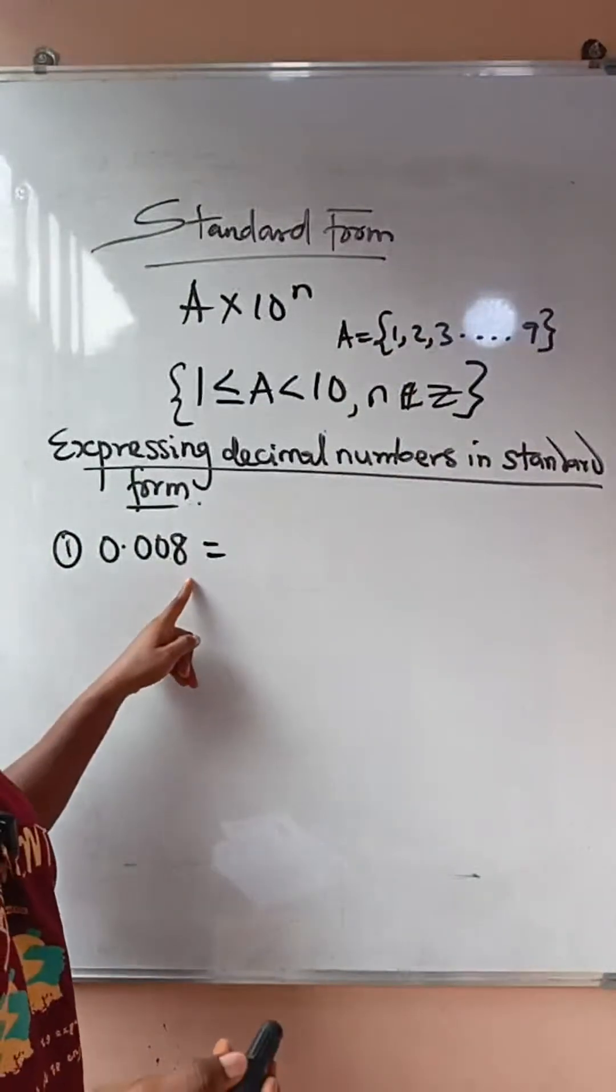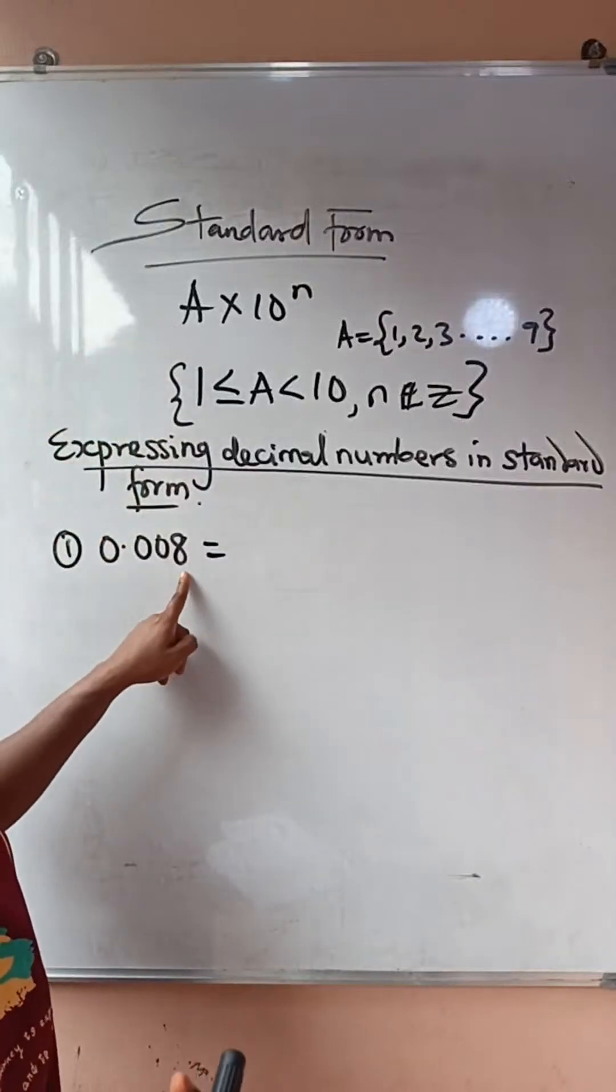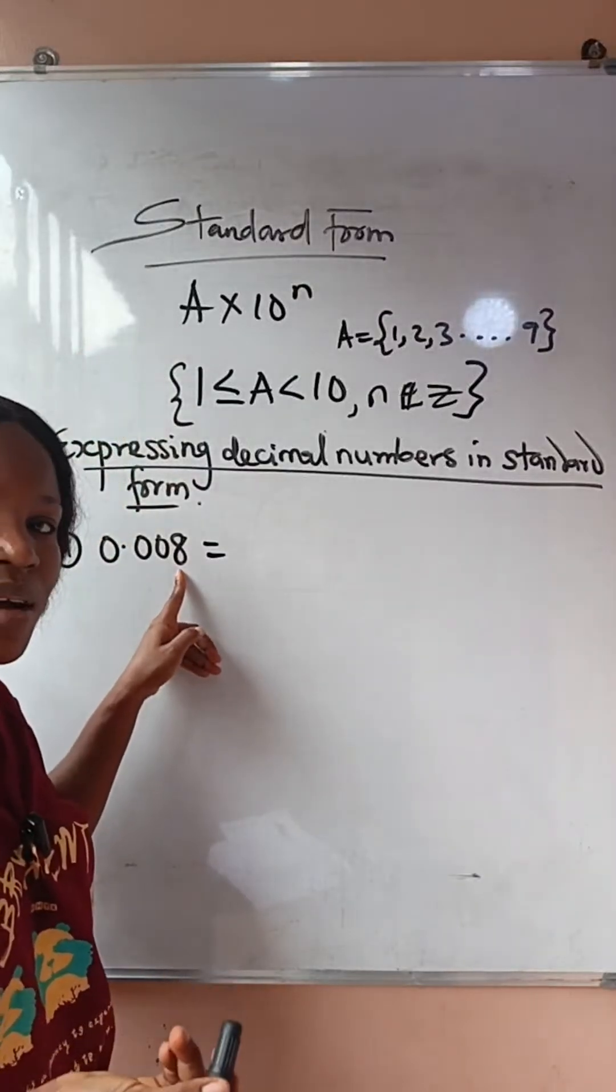So I have 0.008. Now what is my A? My A from here can only be eight, right? It can be eight.